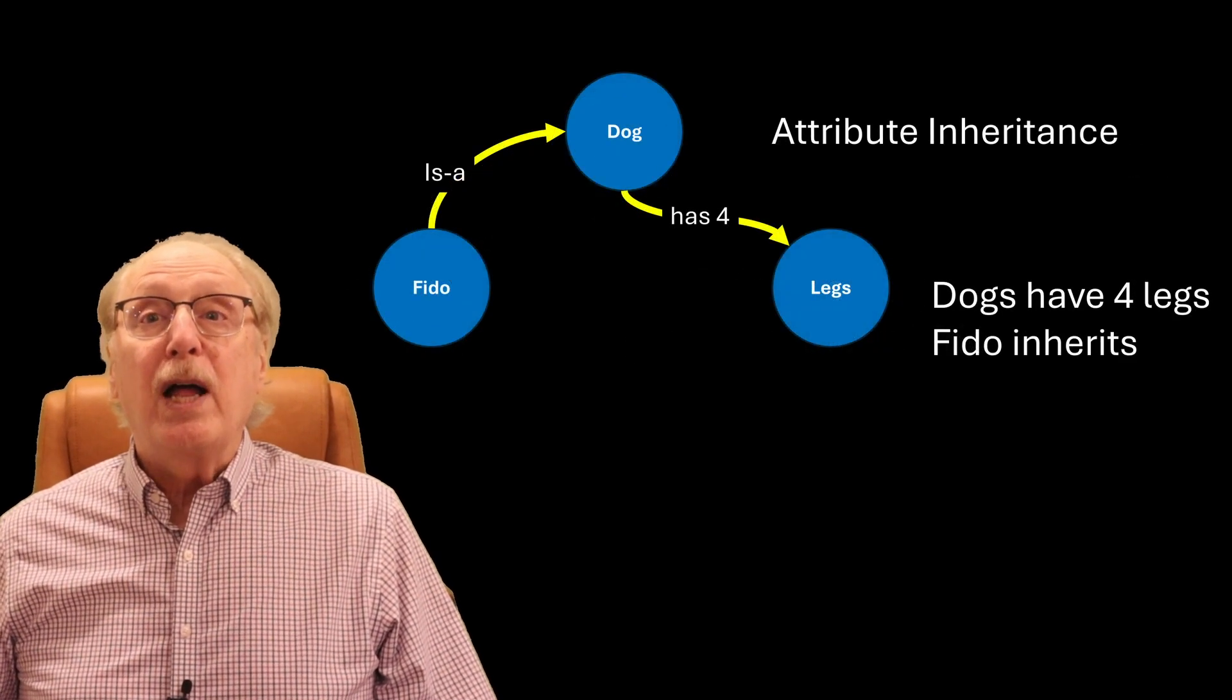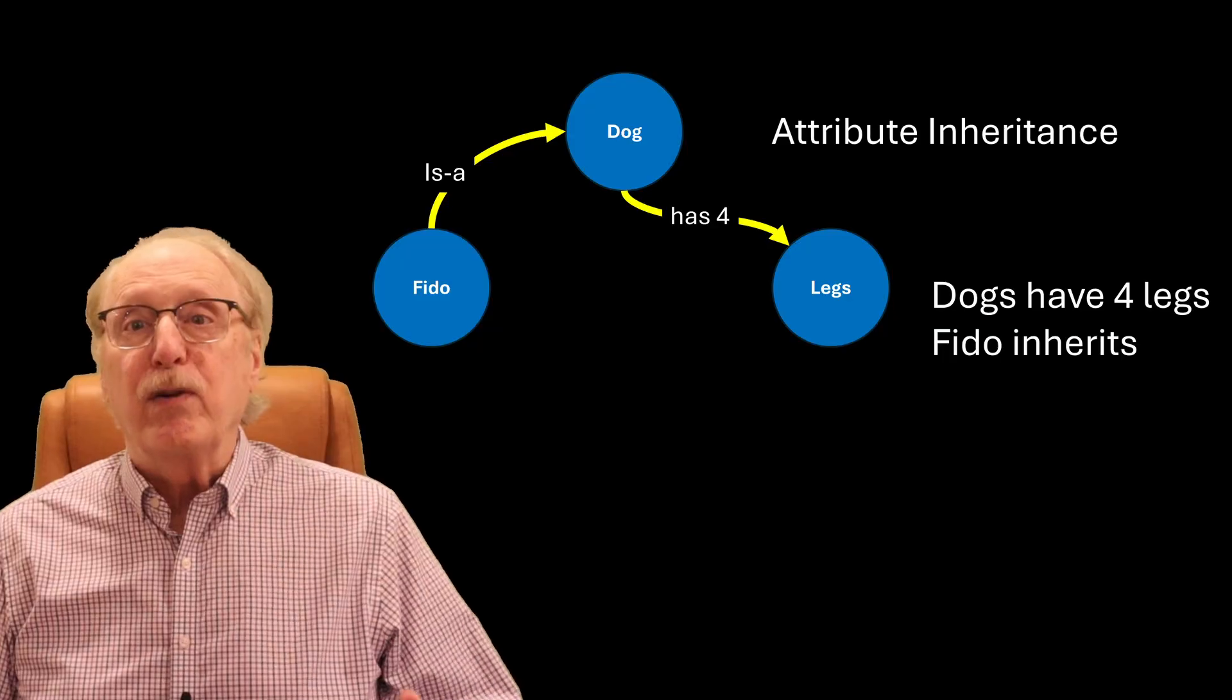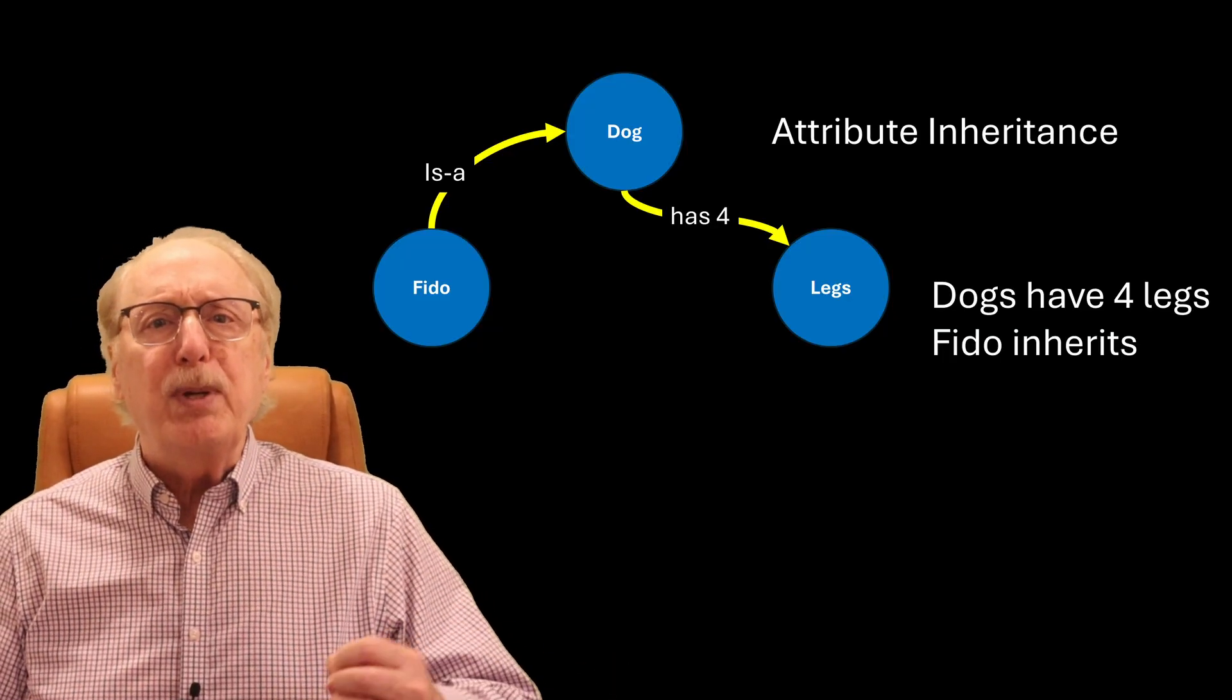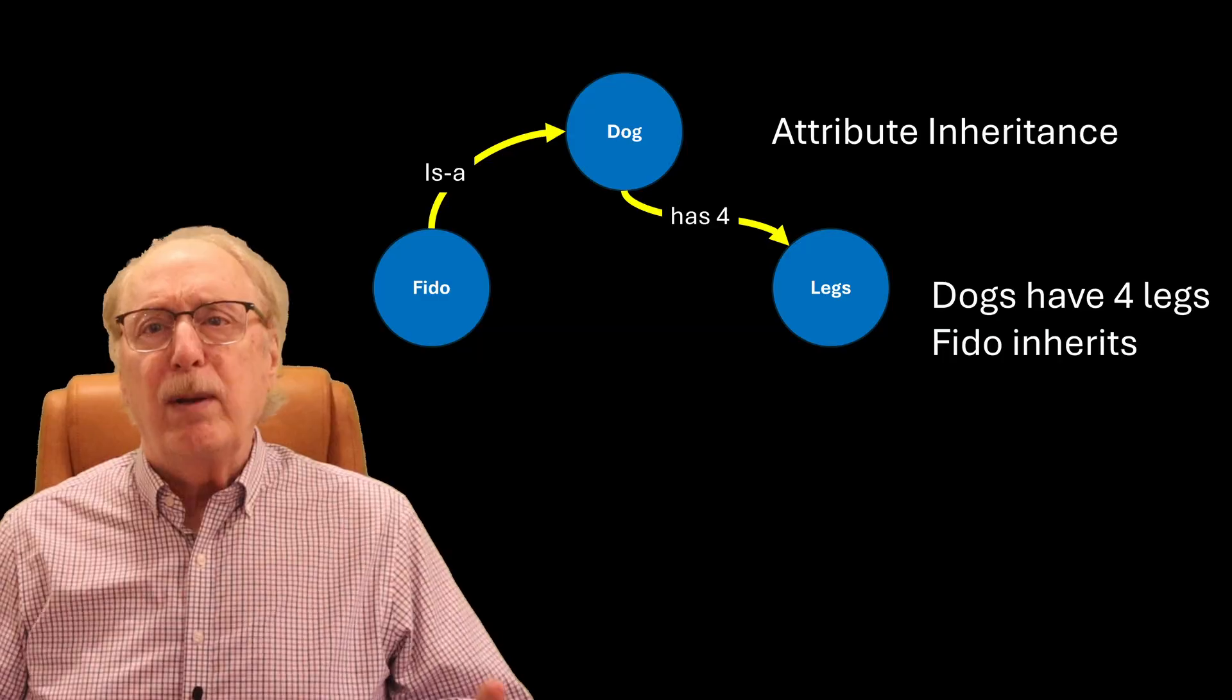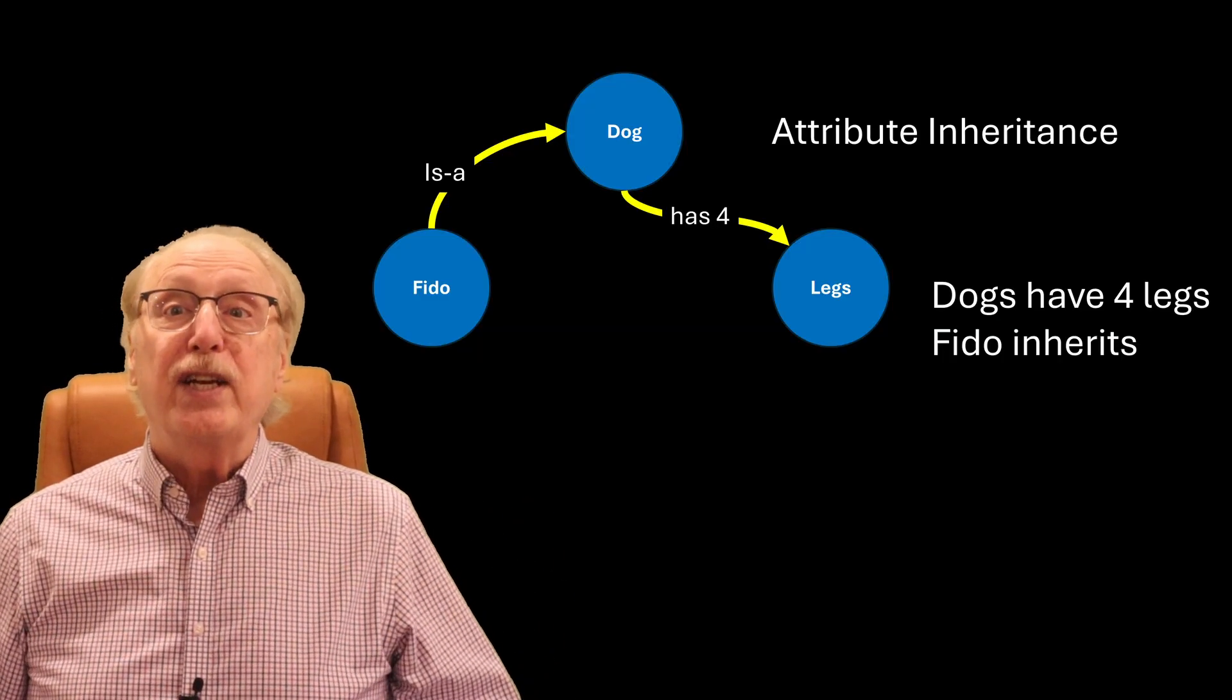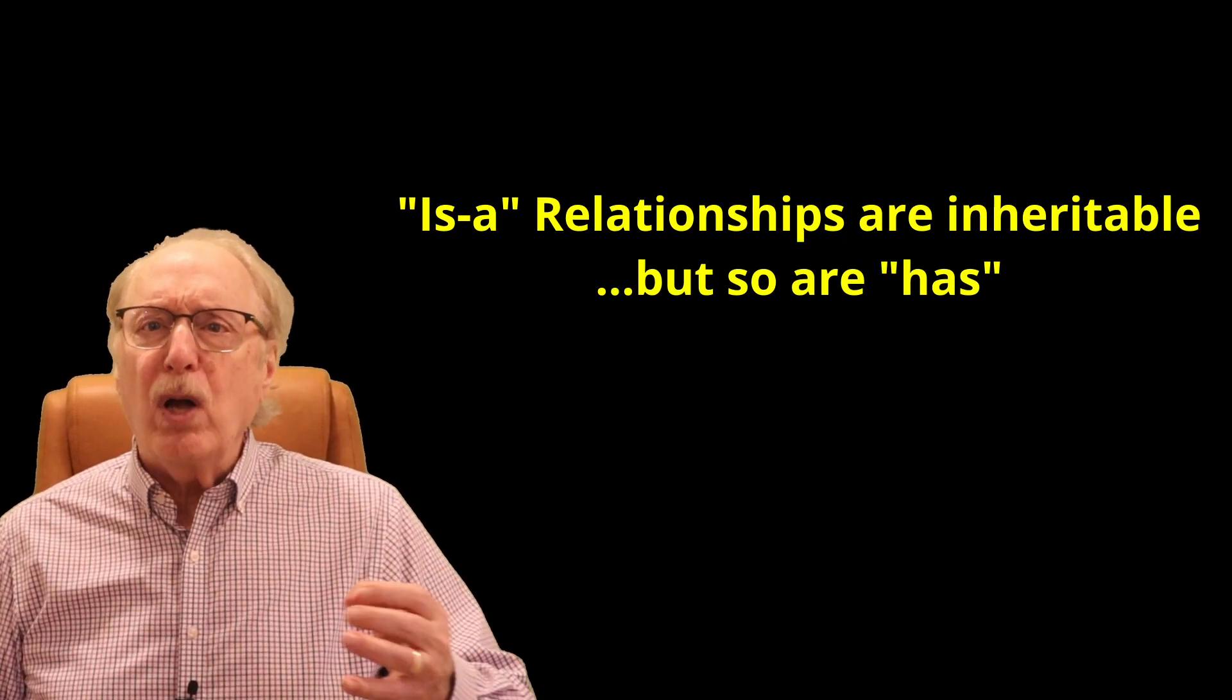Second, knowledge is inherited. Fido doesn't need a separate entry for breathing or walking on four legs. These properties come built in from dog and animal above it because Fido is a dog and dog is an animal. But has relationships are also inheritable. If your arms have elbows and you have arms, you also have elbows.